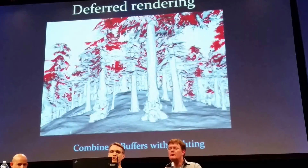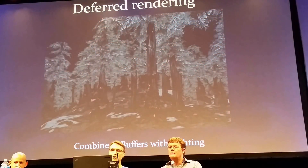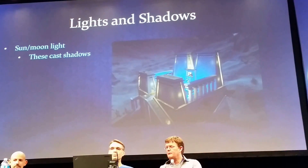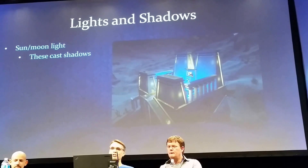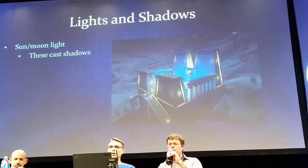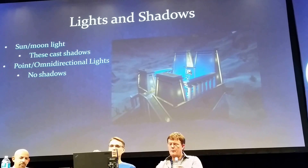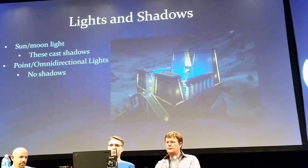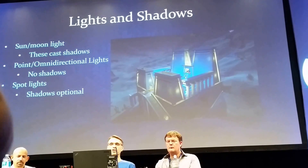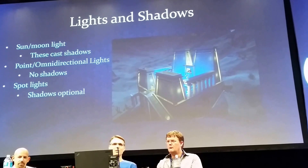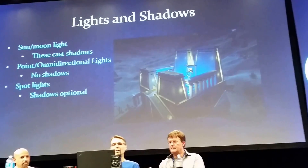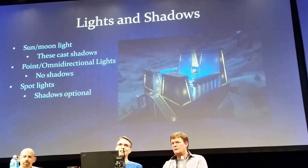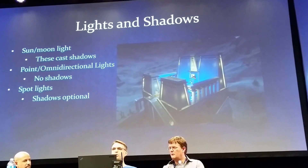When you combine all these g-buffers together and apply the lighting, you get the final result. We have three different kinds of lights in the game. We have the sun and moonlight, which is a global directional light — it's always around and casts shadows. We have point or omnidirectional lights, the ones you've had since beta that you can place in your plans — they do not cast shadows but illuminate light all around. And then the engine also supports spotlights, which you recently got on the marketplace. These have shadows optionally, though right now the shadows are not enabled on those — we're trying to balance performance because spotlights that cast shadows can be pretty costly to render.